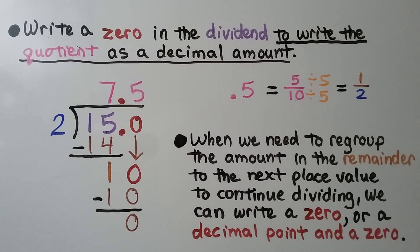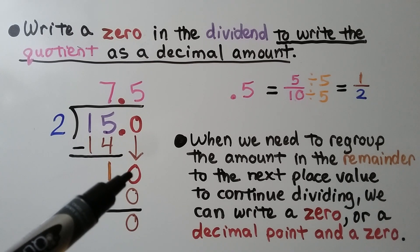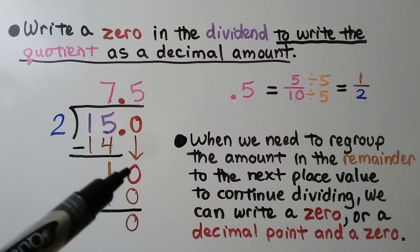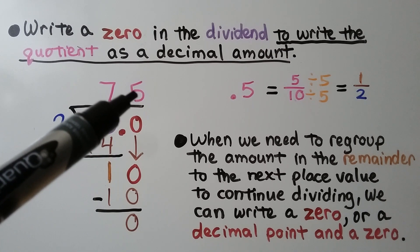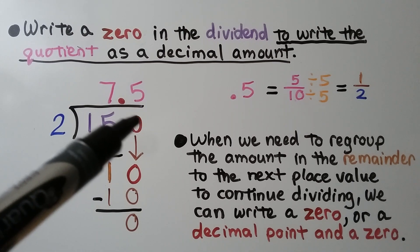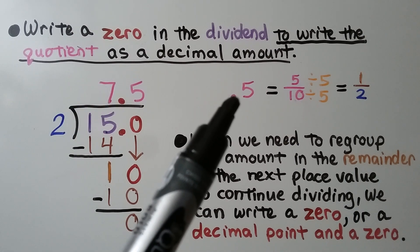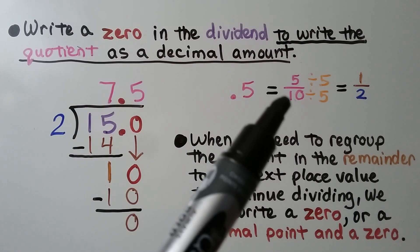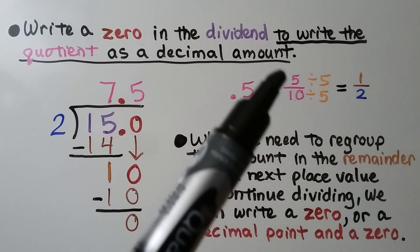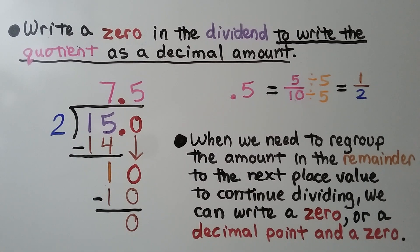We write a zero in the dividend to write the quotient as a decimal amount. When we have a remainder of one, we can add a decimal point and a zero so that we can drop down another digit for the dividend. Two fits into 10 five times. Two times 5 is 10, we get a remainder of zero. Because we added this decimal point and this zero, the decimal point for the quotient will go directly straight up. Five tenths equals the fraction 5 tenths, which equals one half — 5 divided by 5 is 1, and 10 divided by 5 is 2.